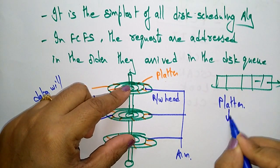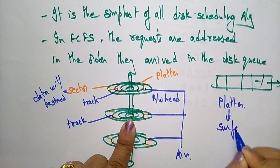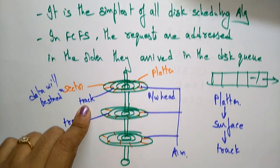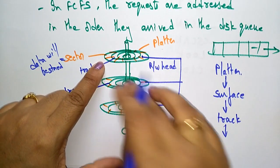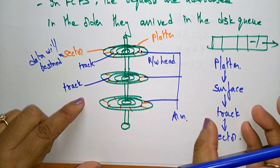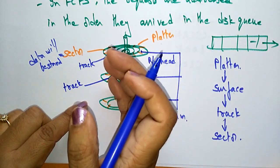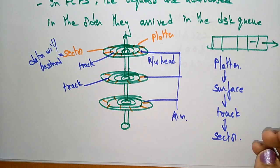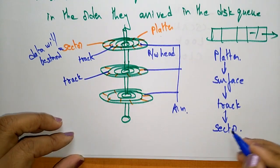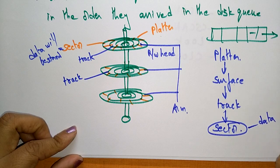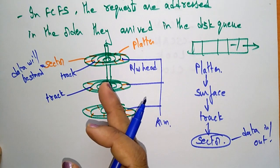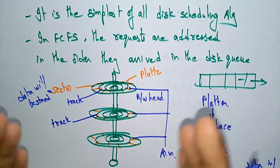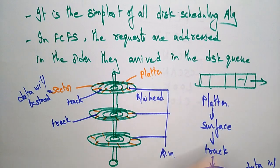From the platter, the arm reaches the specific surface. After reaching the surface, it finds which track the data is stored on, and then moves to that track. Once it reaches the track, it finds the data in the specific sector. So the cycle is: platter → surface → track → sector. The arm reads or writes data in that particular sector. This is the basic introduction to the read/write head mechanism.